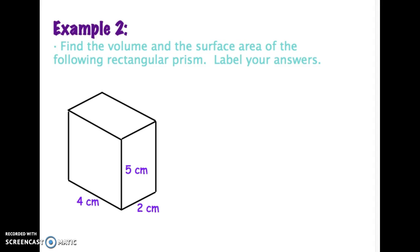I'm going to do the volume first just because I think it's easier. Since this is a rectangular prism, I can use that simple formula: length times width times height. So I'm going to do four times two times five, and I should get a volume of 40. This time it tells you it's centimeters, so you're going to call it cubic centimeters.